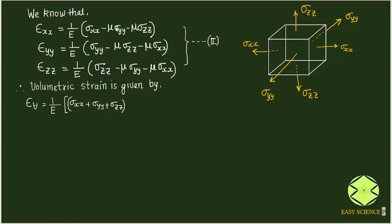All the remaining terms are minus. If you look carefully, we have 2 μ·σxx terms, 2 μ·σyy terms, and 2 μ·σzz terms. So we can combine them as minus 2μ common, with (σxx + σyy + σzz) inside. We can further simplify and take σxx + σyy + σzz common.